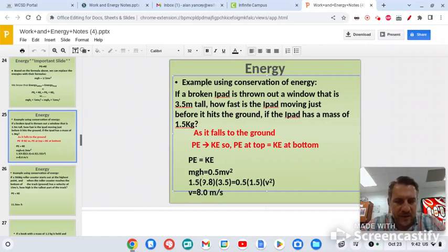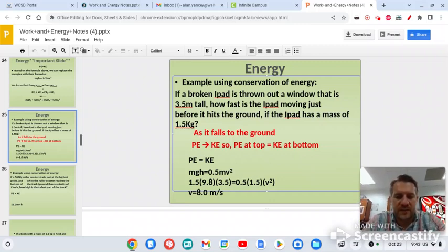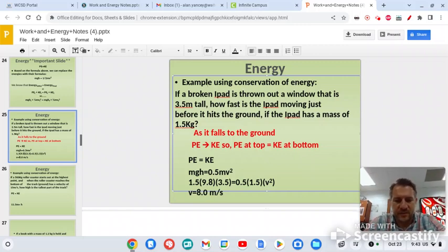So mass times gravity times height. So the mass was 1.5 kilograms. Gravity is always 9.8 on our planet. And the height was 3.5. You're going to equal 1/2 times the mass again, 1.5. And we're trying to find velocity squared. So just use basic algebra, divide both sides by 1/2 times 1.5, and that'll get velocity by itself. So you're going to end up with 1.5 times 9.8 times 3.5, and then divide that by 1/2 times 1.5. That's going to give you a number. Then you need to find the square root of what the answer for your v² is. So when you find the answer, then you're going to do square root of that answer, and that will give you the answer in this case, which would be 8. So that probably ended up being like 64 or something like that.